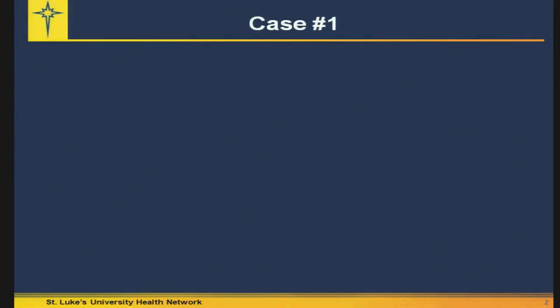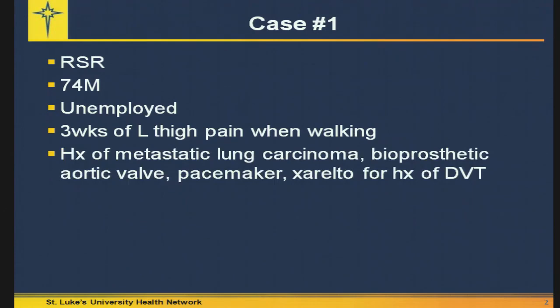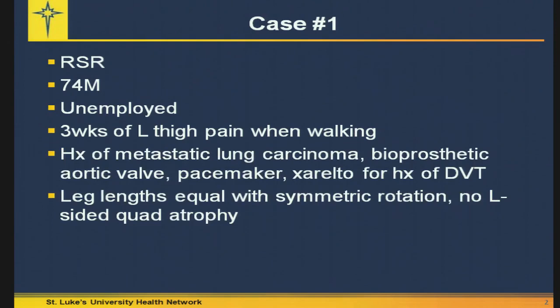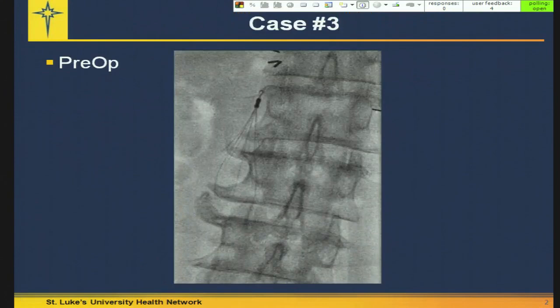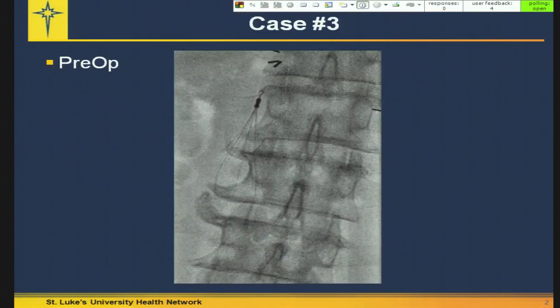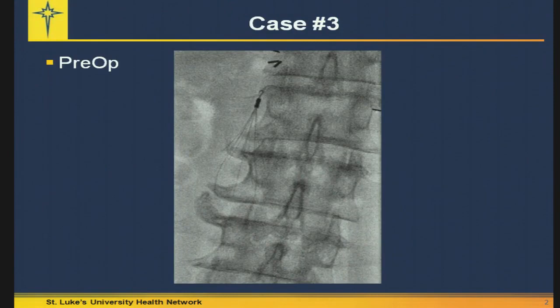Case three — Dr. DeLong's case: a 74-year-old male, unemployed, with three weeks of left thigh pain when walking, history of metastatic lung carcinoma, a bioprosthetic aortic valve, pacemaker, and Xarelto for a history of DVT. Leg lengths are equal, asymmetric rotation, no left-sided quad atrophy. Pre-op x-rays show a lytic lesion in the subtrochanteric region with what appears to be a transverse fracture line. He had an IVC filter in place because of other events surrounding his pulmonary malignancy, and other documented bone mets in his skull and spine. This prompted the question: are you getting pre-op ultrasounds for DVT in some of these patients?